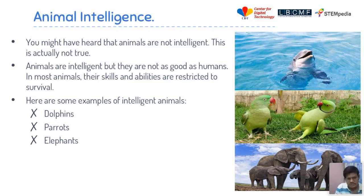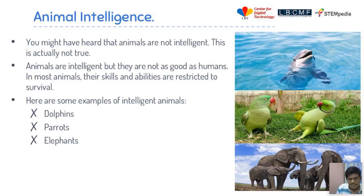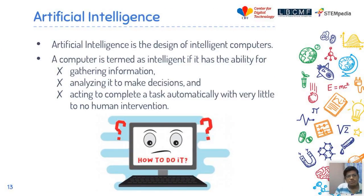Now talking about animal intelligence — animals are also intelligent, but not as much as humans because in most animals their skills and abilities are restricted to survival. They are not so intelligent that they can detect everything; they are just intelligent enough for survival. Some of the most intelligent animals are dolphins, parrots, and elephants. Now, what exactly is artificial intelligence? We have been hearing about it for so long. Artificial intelligence is the design for making intelligent computers.